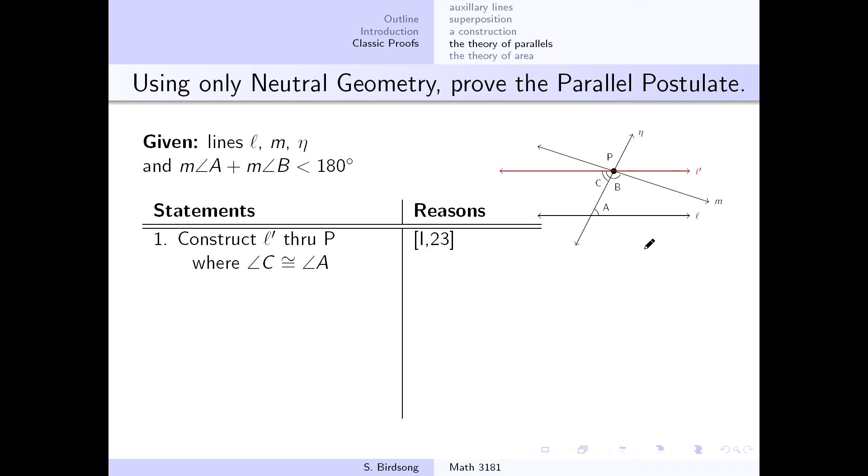Now we've done something with alternate interior angles before. Using this proposition 27, it says, hey, if you've got two lines, transversal and alternate interior angles are congruent, automatically these two lines have to be parallel. So L and, on purpose, the strategically named L prime are going to be parallel to each other.